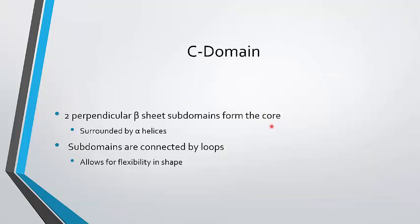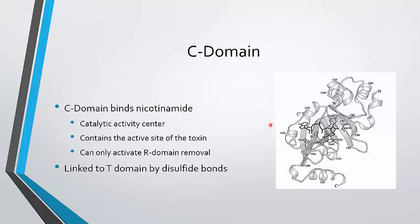Lastly, we're going to talk about the C domain. This is two perpendicular beta sheet subdomains that form the core of the protein, and these subdomains are surrounded by alpha helices. Subdomains are connected by loops, which gives them flexibility in shape, and that's important in the mechanism of entry. The C domain contains the catalytic activity. This is where the protein binds nicotinamide, which is one of the ways that it catalyzes a reaction in the cell causing cell death.